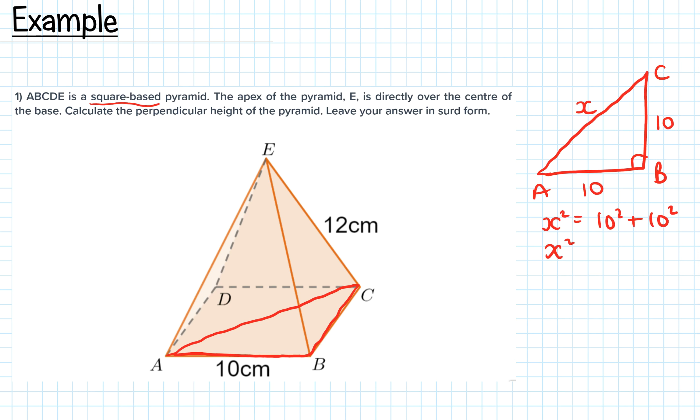x² equals 200, or x equals √200. The question says leave your answer in surd form - that just means leave it as a square root, don't try to simplify it.